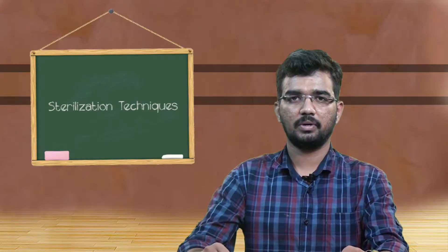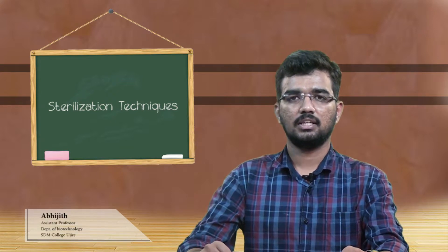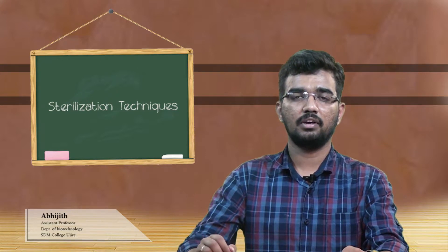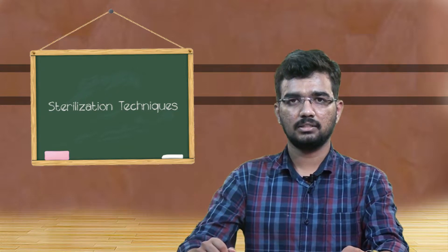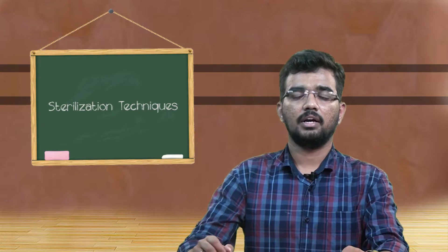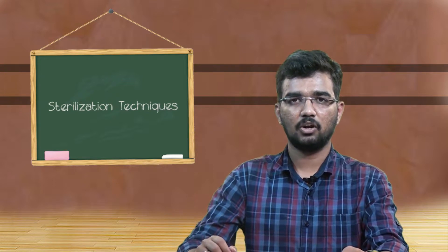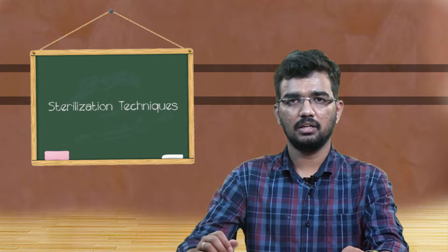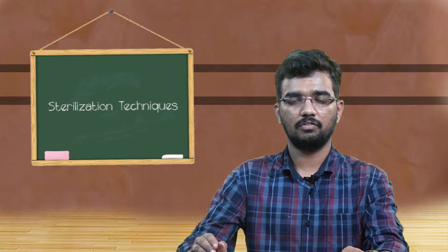Hello friends. Now I am going to speak about sterilization techniques involved in plant tissue culture. Sterilization is a process where we are eliminating the unwanted microbes which are interfering in the process of plant tissue culture. We are inoculating many explants, so some microbes can interfere in that experiment and degrade the nutrient media so that the explant cannot grow into a callus. Sterilization is a process where we are freeing the glass equipment or the media from unwanted microbes interfering in our experiment.